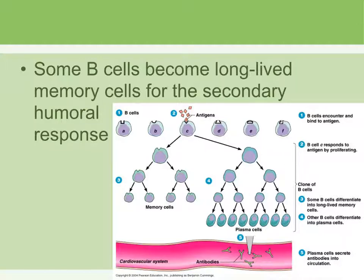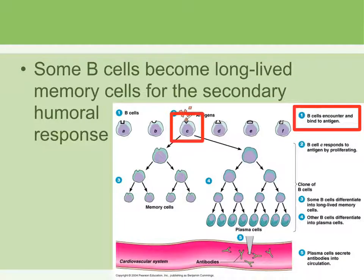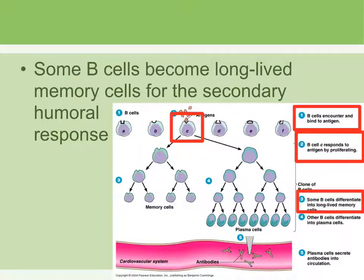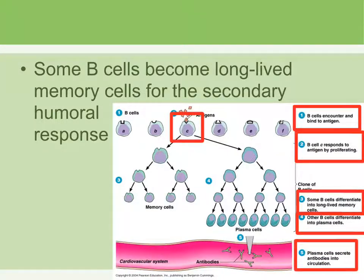Here is a general overview of the humoral response. First, a B cell encounters a specific antigen. Then the B cell that fits the antigen is selected and clones itself. The cloning produces two types of cells: memory cells, which are saved for later use, and plasma cells, which secrete antibodies into circulation — blood, mucus, and other body fluids — to carry out the immune function.